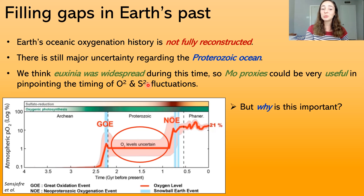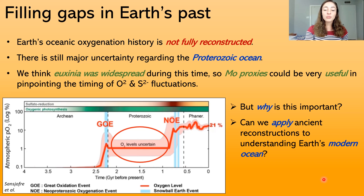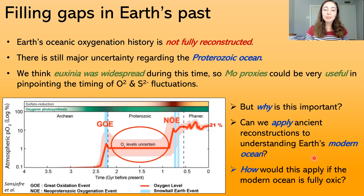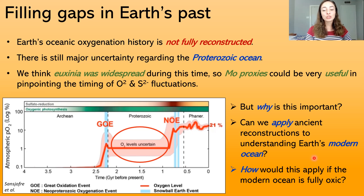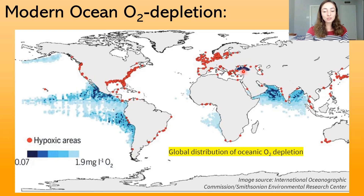But one could also ask: why is it important to fill the gaps in Earth's history in the first place? Can we apply our understanding of the ancient ocean to understanding Earth's modern ocean? We can — but how would we apply our understanding of euxinic periods in Earth's history to the modern ocean if the modern ocean is oxic? Well, the modern ocean is mostly oxic, but not fully oxic. There are oxygen-depleted and even sulfidic zones in Earth's modern ocean.